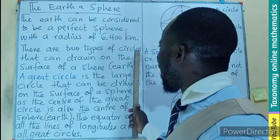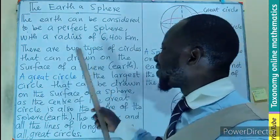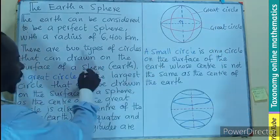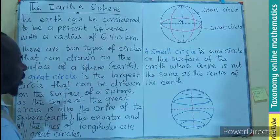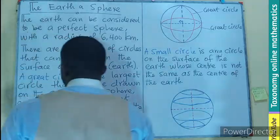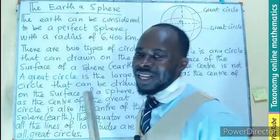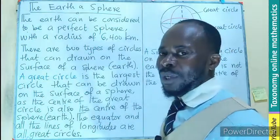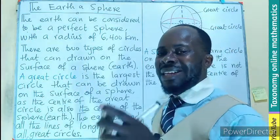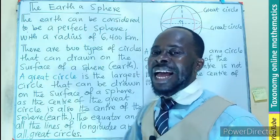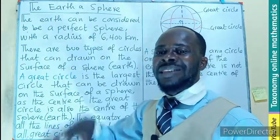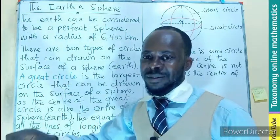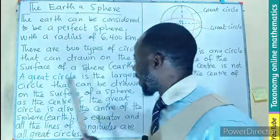There are two types of circles that we can draw on the surface of the sphere. One of them is called a great circle. A great circle is a circle whose center is the same as the center of the sphere.